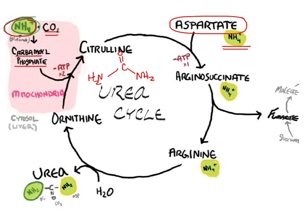As we go through, the only other thing I want to point out is we're producing fumarate right here, which is a connection with the Krebs cycle. There's a lot of interplay between the urea cycle and the Krebs cycle, which is explained a little bit more in our LO. And then finally, we end up producing urea, which then goes through the kidneys and is excreted safely.